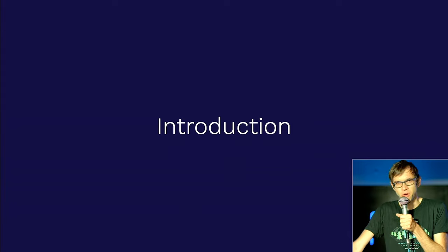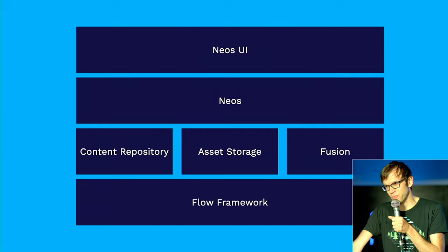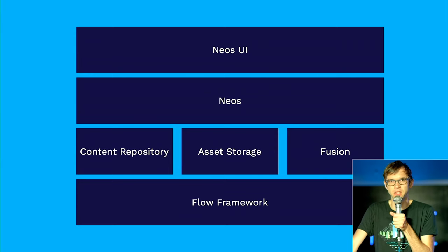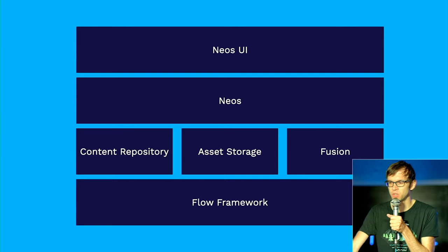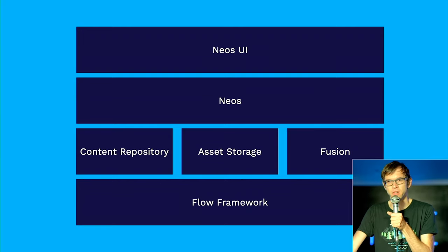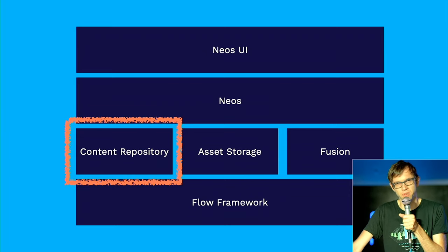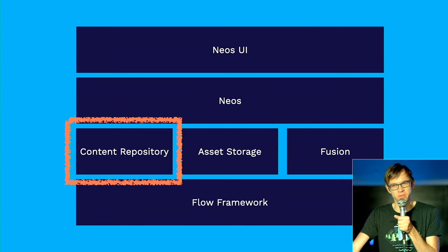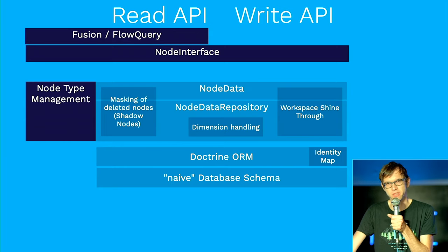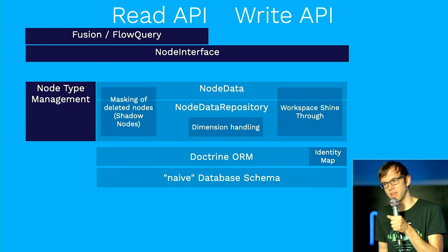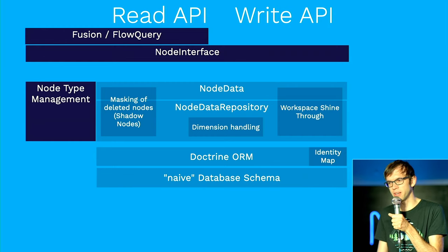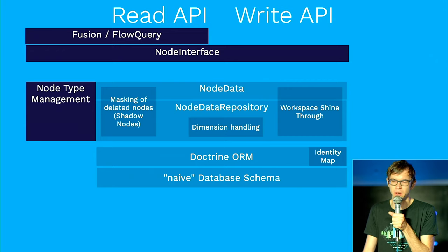Neos is built of multiple packages: the Flow framework at the bottom, Neos and the Neos user interface at the top, and in the middle layer there are three boxes — the content repository, the asset storage, and the component for Fusion rendering. This talk will be mostly about the content repository, which is the main storage of our data. Zooming into it, we have node type management, public APIs shown in dark blue, and internals like node data and Doctrine shown in a lighter color.